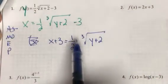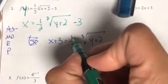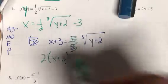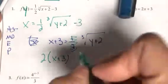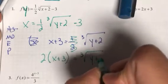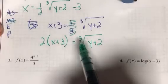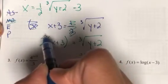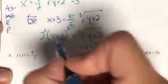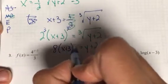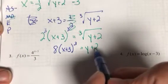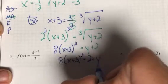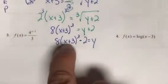Next, multiply both sides by 2 (the reciprocal of one-half) to eliminate the fraction — you don't need to distribute the 2. Then cube both sides to get rid of the cube root exponent, leaving y + 2 on one side and 2(x + 3) cubed on the other. Go ahead and cube the 2: 2³ = 8. Finally, subtract 2 to get y by itself.